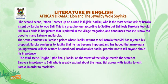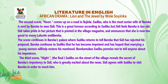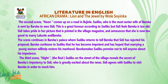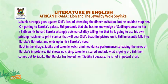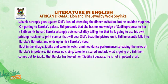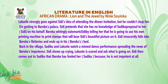Baroka confesses to Sadiku that he has been impotent and had hoped that marrying a young woman would cure him. Baroka makes Sadiku promise not to tell anyone about his impotence. The third scene, night — the final scene — Sadiku on the street of the village reveals the secret of Baroka's impotency to Sidi, who is greatly excited. Sidi agrees with Sadiku to visit Baroka in order to mock him. Despite Sadiku going against the idea, she cannot stop Sidi. On getting to Baroka's palace, Sidi pretends she has no knowledge of Sadiku having proposed to her on his behalf.